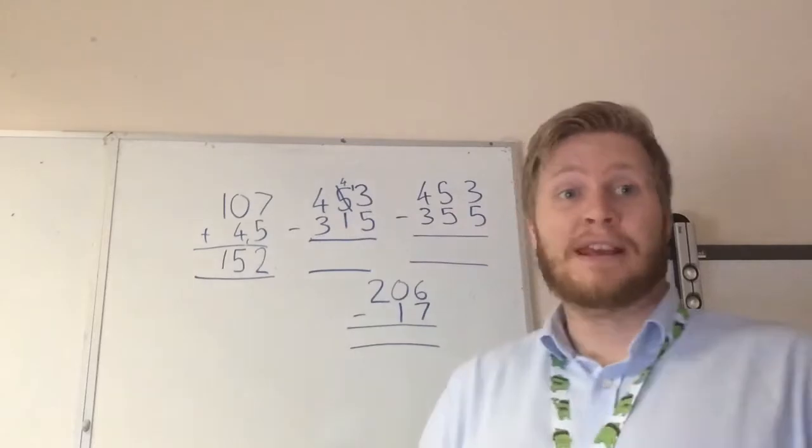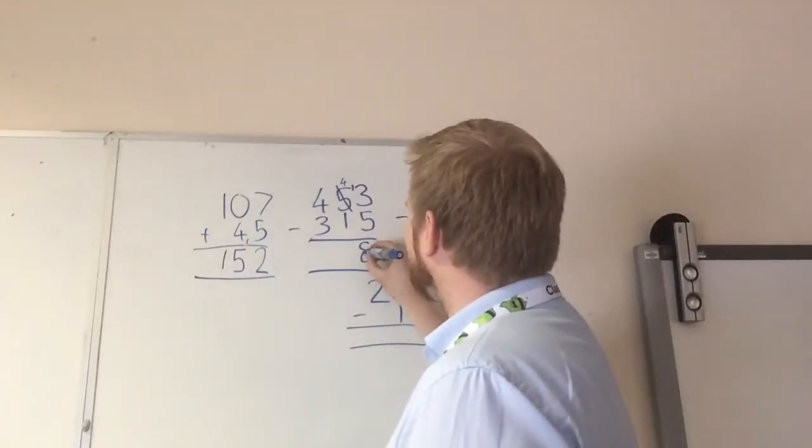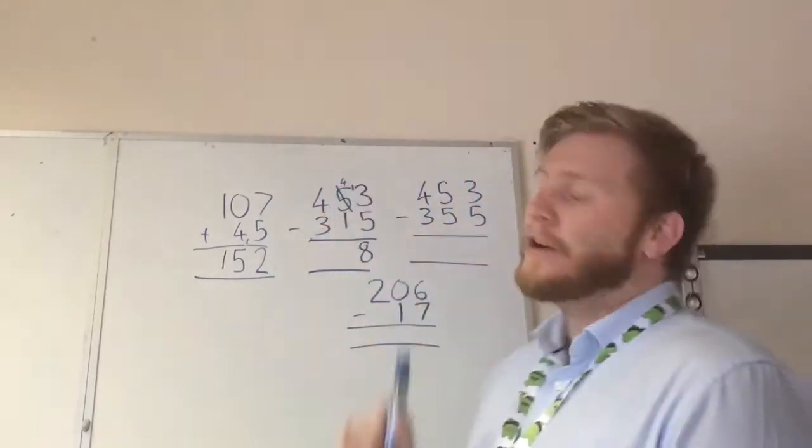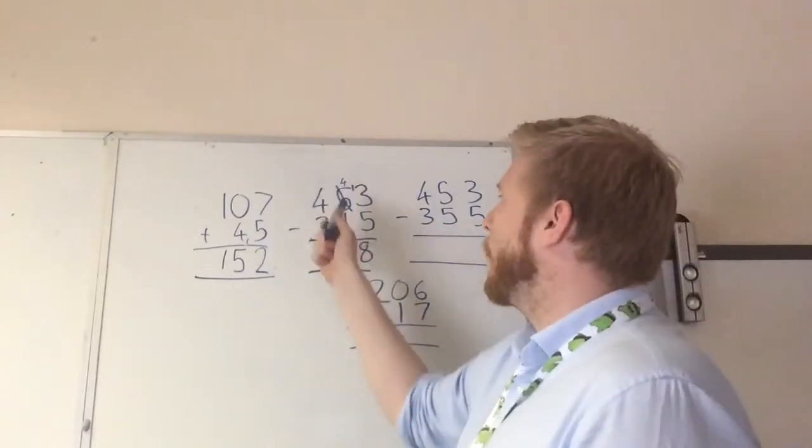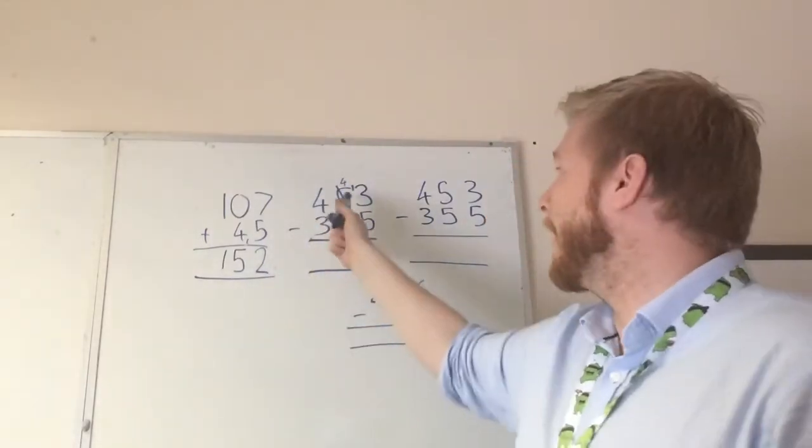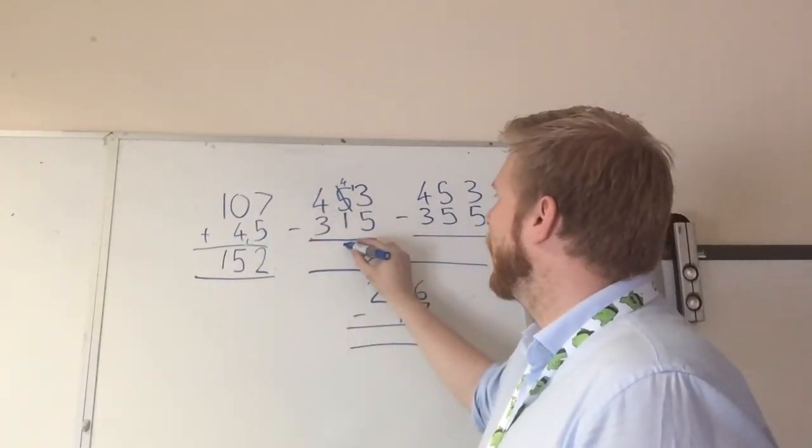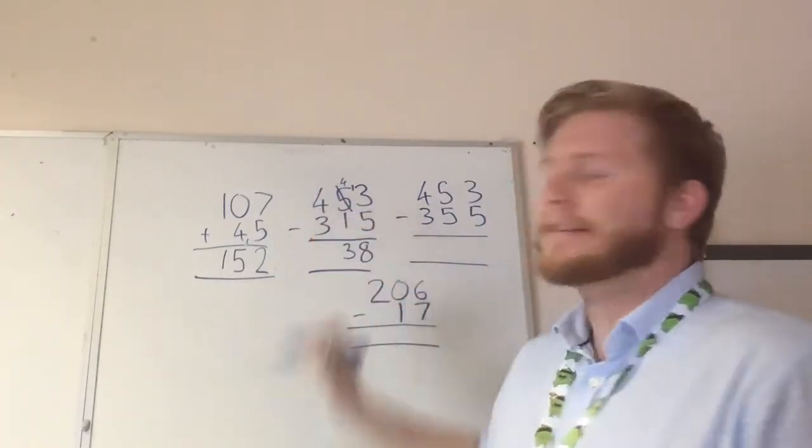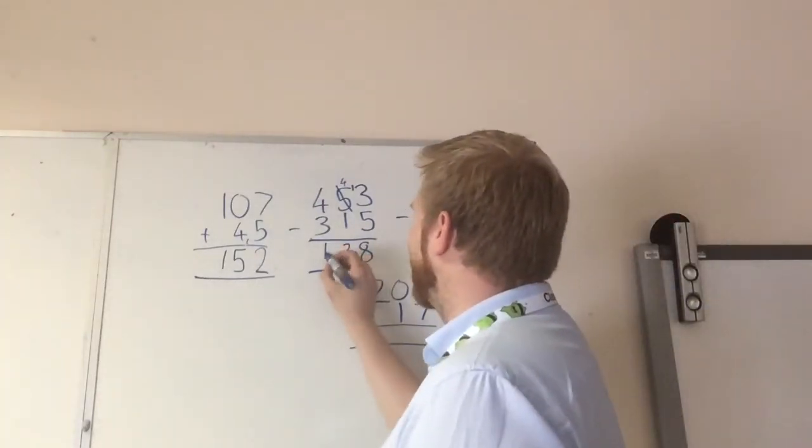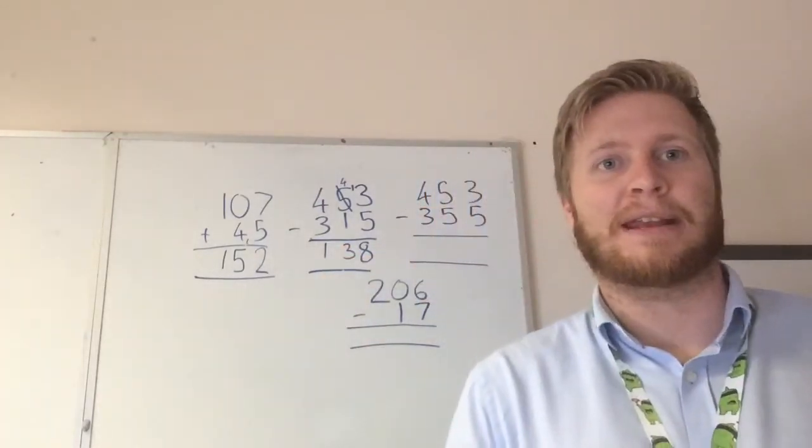Okay, so 13 take away 5 is 8. Okay, and then when we get on our next column, we have to remember it is now 4. Not, sorry 5, it's 4. Okay. So 4 take away 1 is 3. And then last column, 4 take away 3. Easy, we have 1. So we have 138.